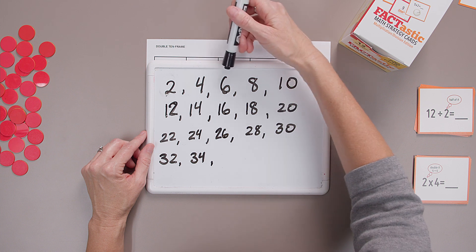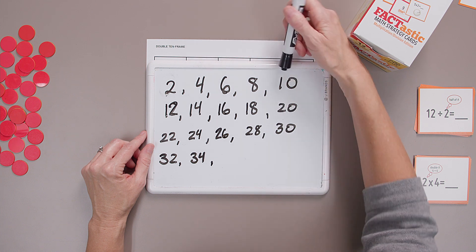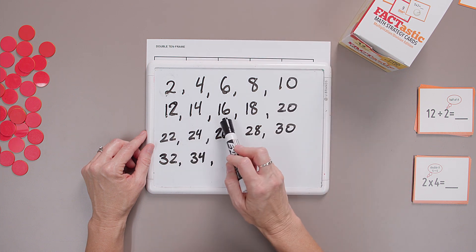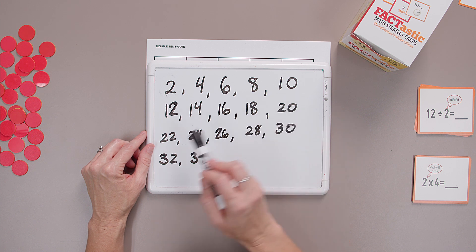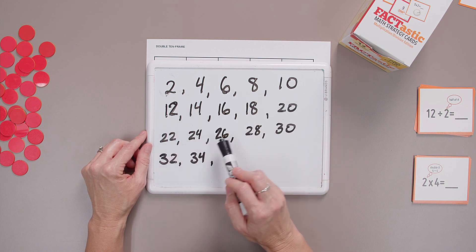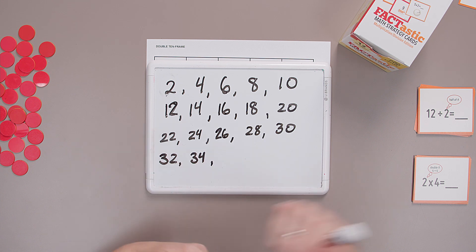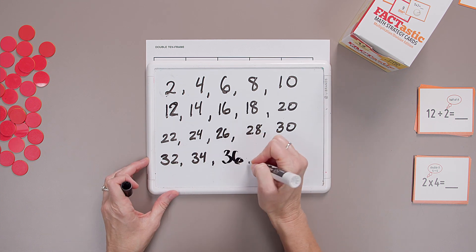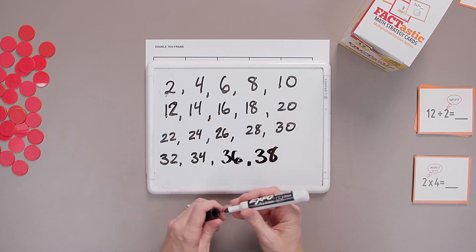Two, four, six, eight, ten, twelve, fourteen, sixteen, eighteen, twenty, twenty-two, twenty-four, twenty-six, twenty-eight, thirty, thirty-two, thirty-four, thirty-six, thirty-eight, and on.